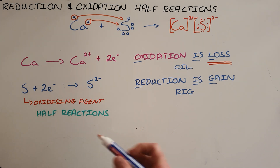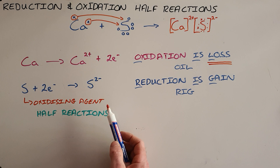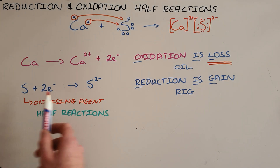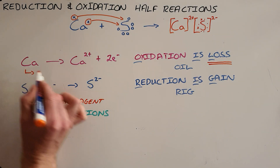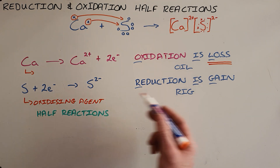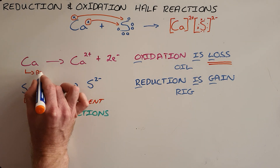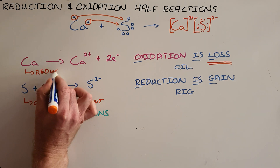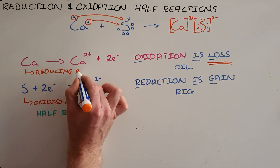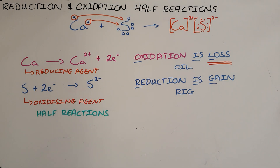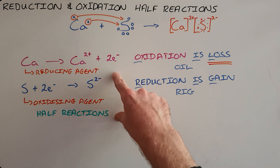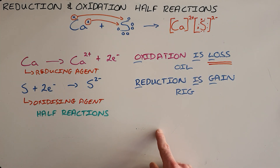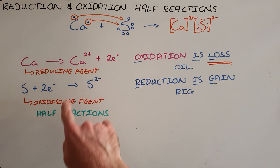By the same reasoning, we can say that calcium is the reducing agent, because in order for sulfur to be reduced — in order for sulfur to gain electrons — it is necessary for calcium to lose electrons. So we say that calcium is enabling the reduction of sulfur, and therefore calcium is the reducing agent. We call these reduction-oxidation half-reactions because they cannot happen in isolation; you require two half-reactions in order for a complete reaction to occur.